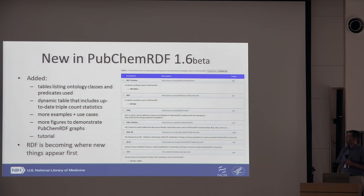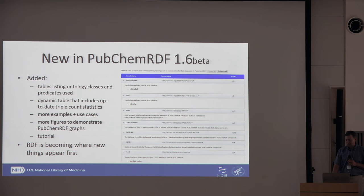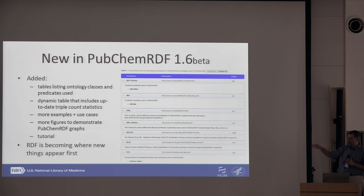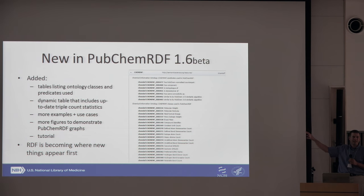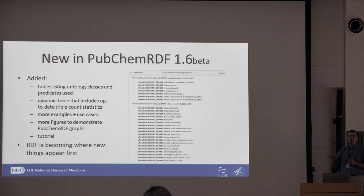In the 1.6 beta we've added quite a number of things. Key among those is we're now telling you explicitly all the different ontologies we're using, the different classes, and the different predicates. It's all listed out, so you can use it as a handy reference to see how we are using these various pieces.